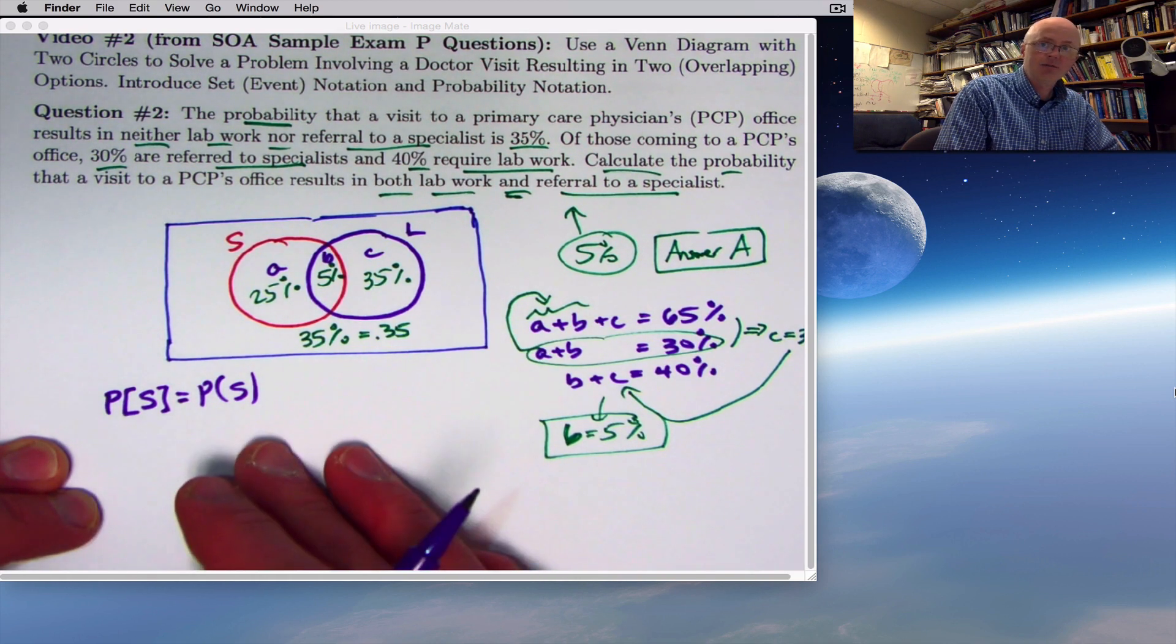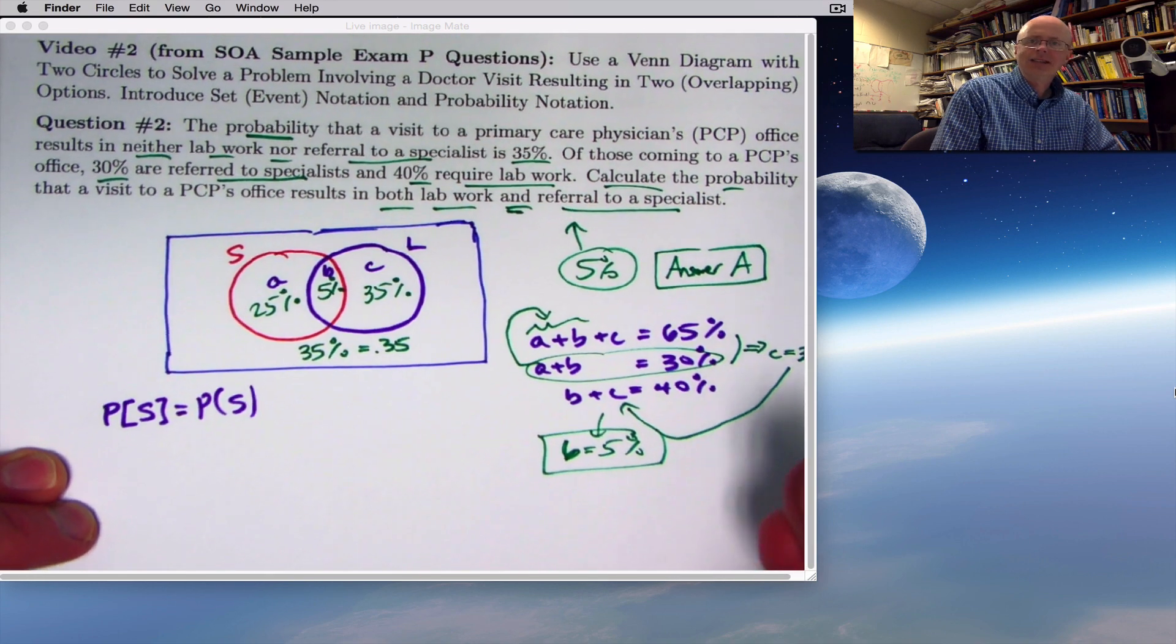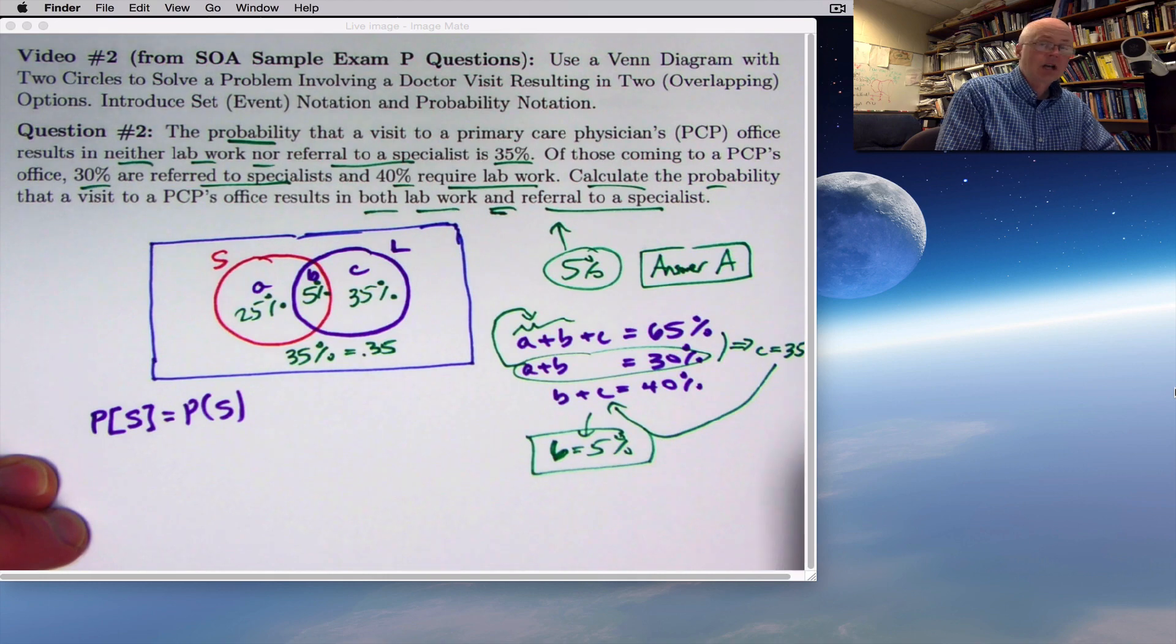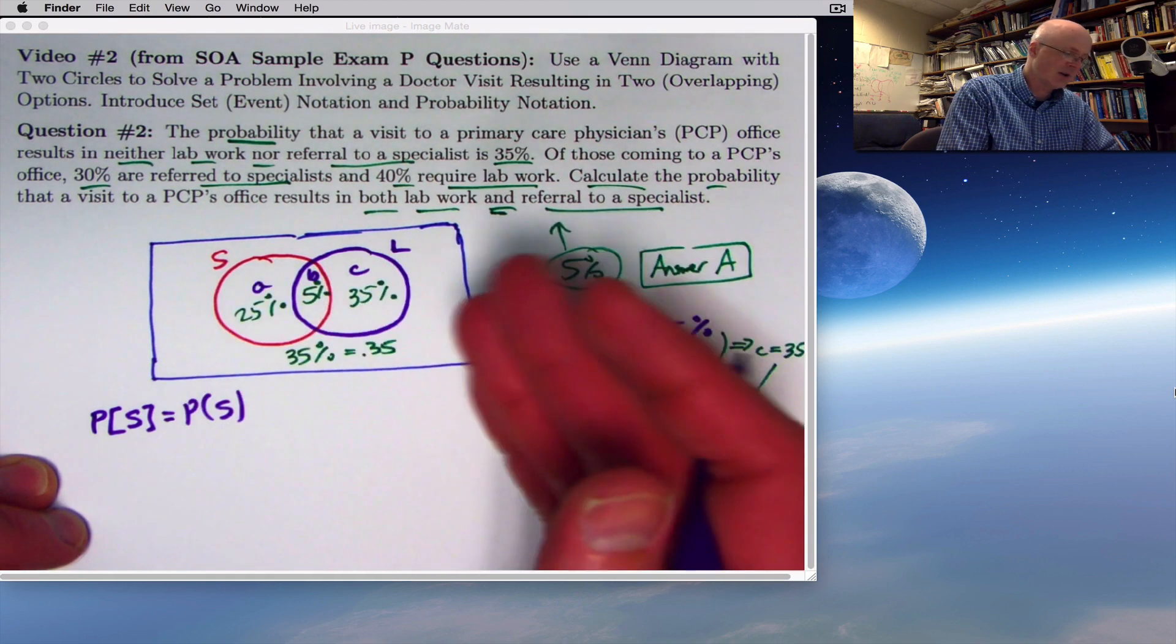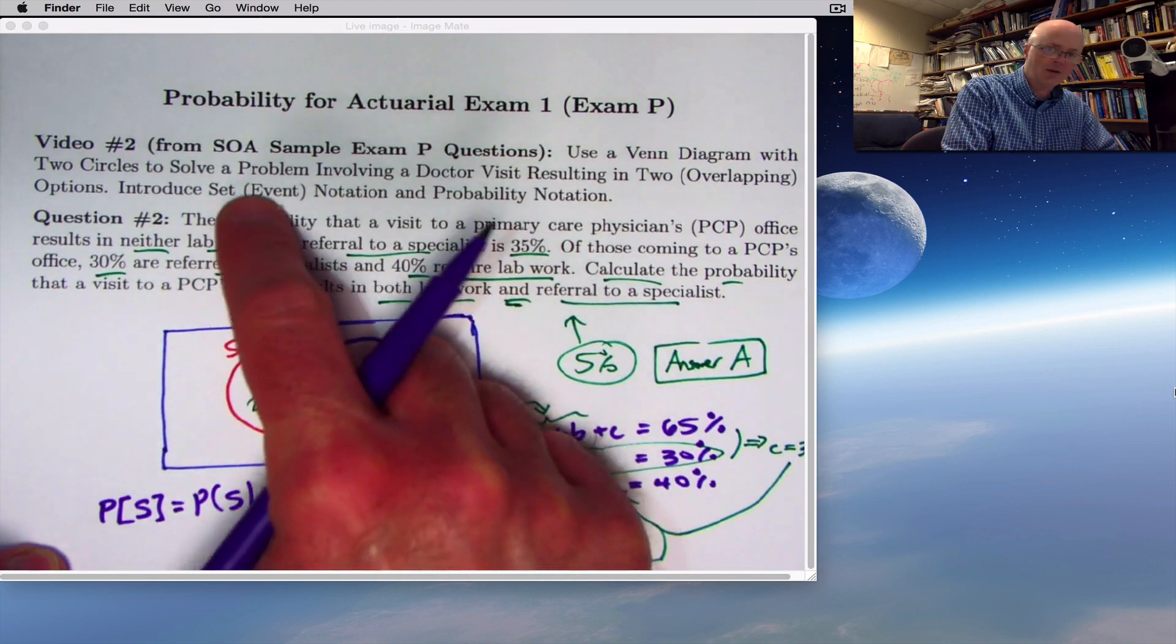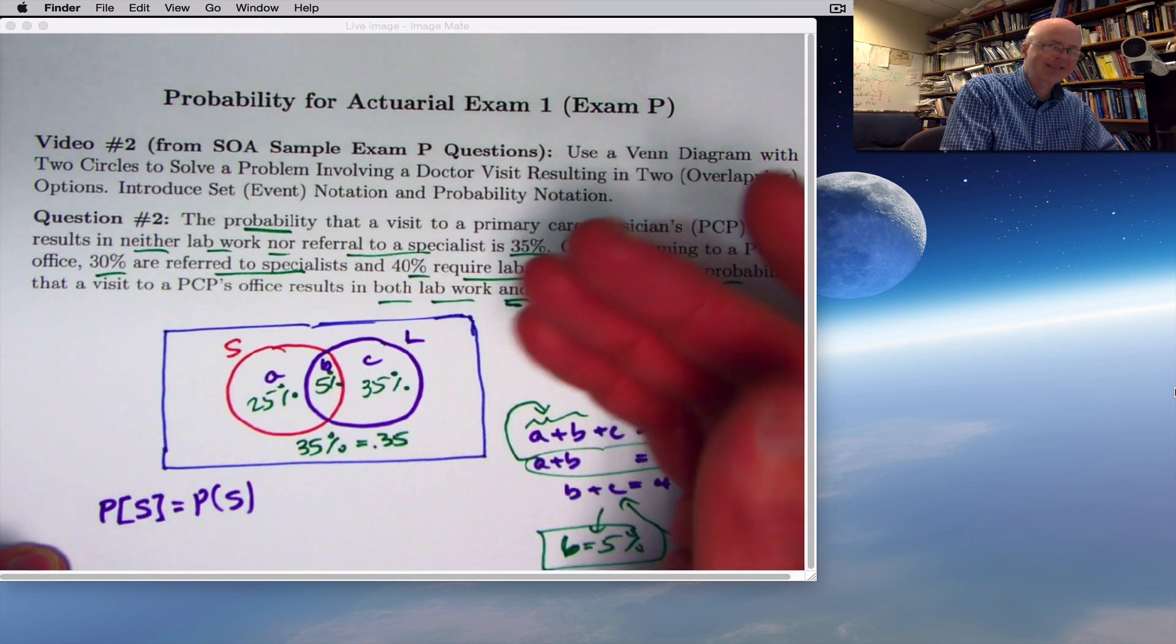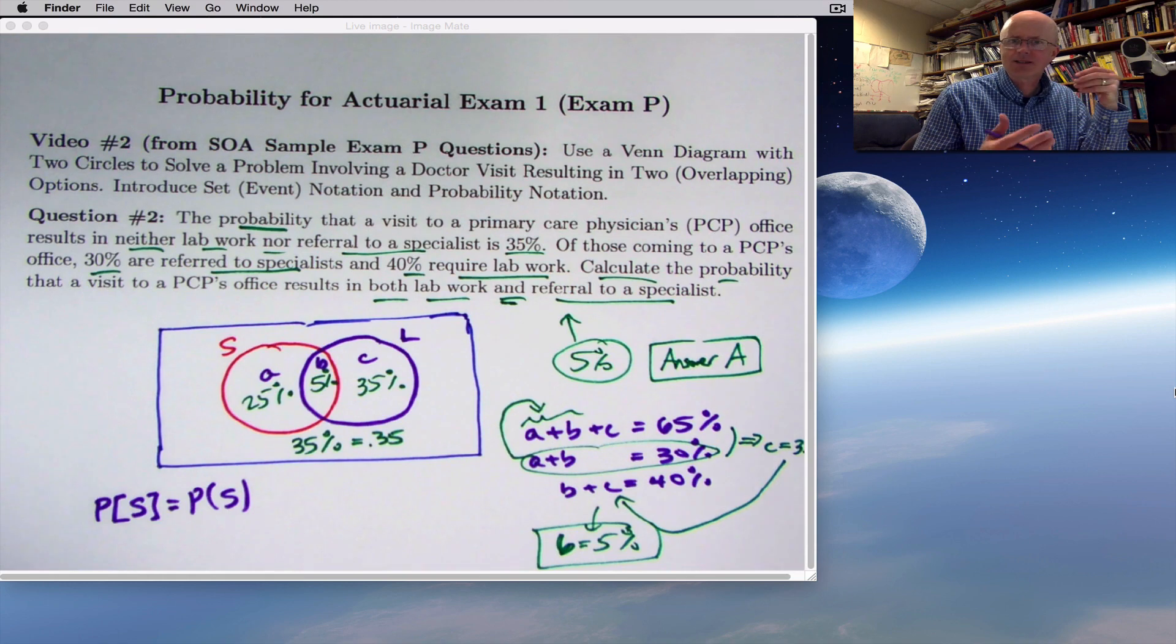Either notation means the probability of S occurring. S and L can be thought of as events, things that can occur. The person could get referred to a specialist, or they could have lab work, or both. That's event notation, using letters to represent things that can happen. This can also be thought of in terms of sets. In this problem, it's best to think of sets of people.